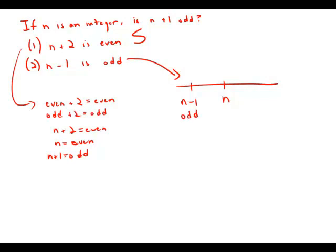So if 1 less than n is an odd number, then n must be an even number, and then the next number above it, n plus 1, must be an odd number. So n plus 1 must be odd. So again, statement number two by itself is sufficient to answer the question.